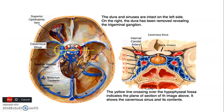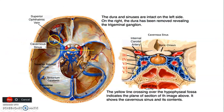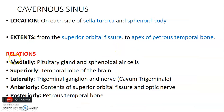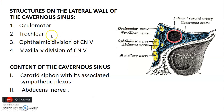Superiorly, the temporal lobe of the brain lies above the cavernous sinus. Laterally, around this region, is the trigeminal ganglion. Anteriorly are the contents of the superior orbital fissure — cranial nerves 3 (oculomotor), 4 (trochlear), and 6 (abducens) — and the optic nerve. Posteriorly is the petrous temporal bone. Within the cavernous sinus itself are the carotid siphon (cavernous part of the internal carotid artery) and the abducens nerve (CN 6). On the lateral wall are cranial nerves 3, 4, and the ophthalmic (V1) and maxillary (V2) divisions of the trigeminal nerve.